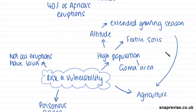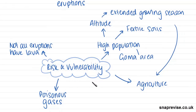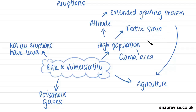Next we're going to look at the risk and vulnerability relating to this eruption. One of the main reasons that it was a high-risk eruption was due to the high population. There is a town next to the volcano called Goma Town, and the reason why people have been attracted to living in this area is because the high altitudes mean they have a long growing season. So this is a farming community, and also the volcano provides really fertile soils — a high population around the volcano due to the good agricultural conditions.